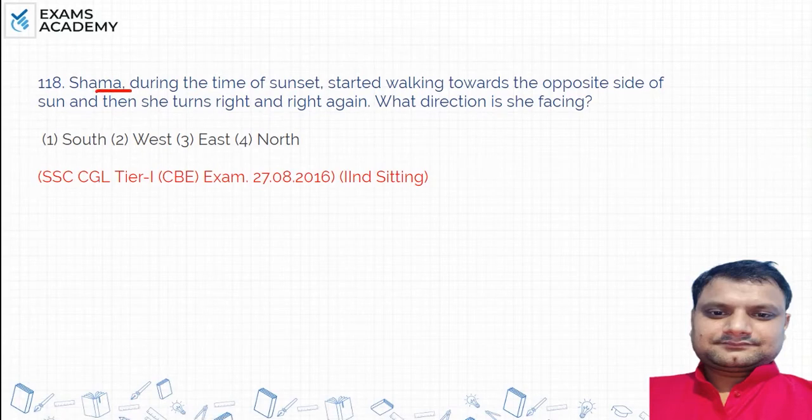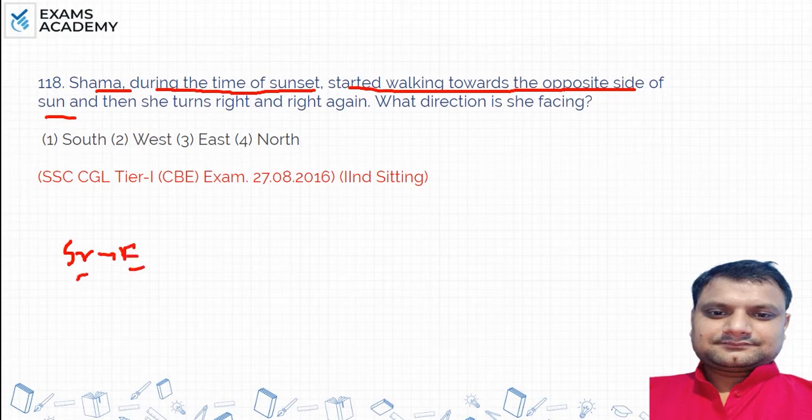First question is: Sharma, during the time of sunset, started walking towards the opposite side of the sun. The sun sets in the west, so what do you say? During sunset, started walking towards opposite side of the sun. Opposite side of the sun was in the west, then what happened to the opposite side of the sun?